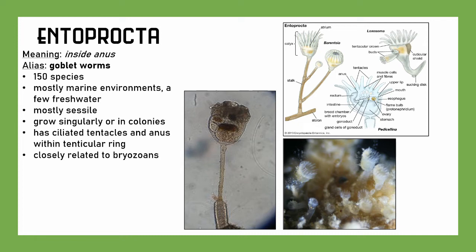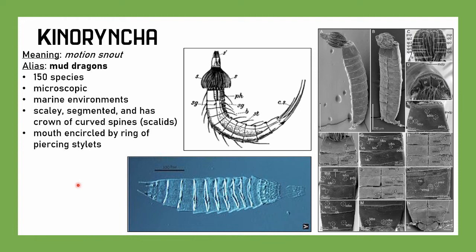We have Kinorhyncha, which means 'motion snout,' with one of the best common names ever: mud dragons. There are 150 species, microscopic, found in marine environments — most notably silt, sediment, and mud. That's why they're called mud dragons. They're scaly, segmented, and have a crown of curved spines. Their mouth is a circle of piercing stylets. Here's a light microscope picture and a scanning electron microscope showing them in all their mud dragon glory. Wouldn't want to run into this in a dark mud pile — but they're microscopic, so no big deal.